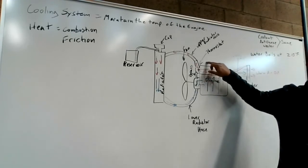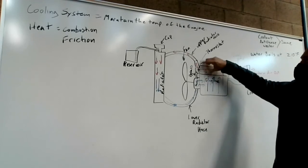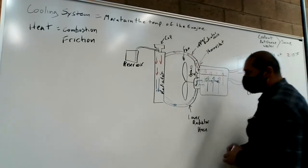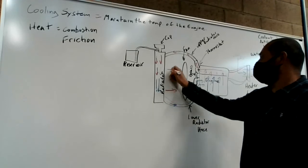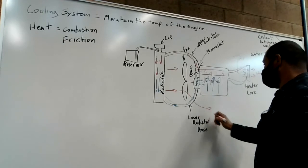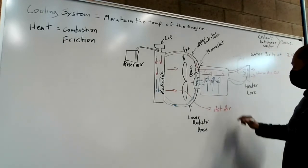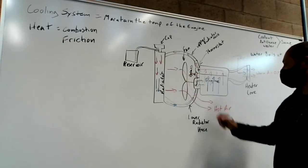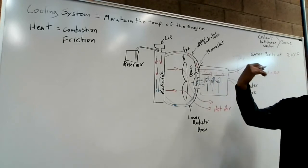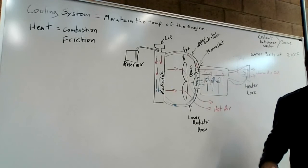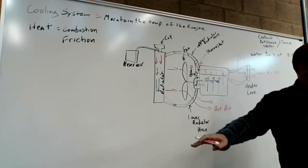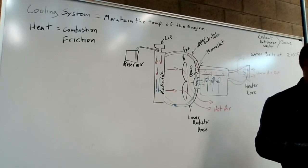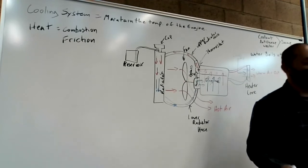When we reach the engine operating temperature, most engines are around 190 degrees on the thermostat. That opens, the hot water is allowed to go through the upper radiator hose into the radiator. This fan is going to pull air through the radiator. So out of the radiator, we're taking this hot air, and this hot air gets pushed under the car. A lot of people don't realize, but your engine compartment is designed to pull air in through the grill, down the firewall under the car.